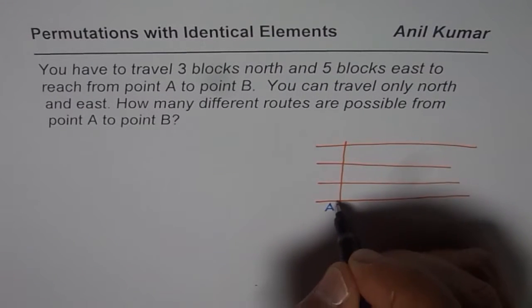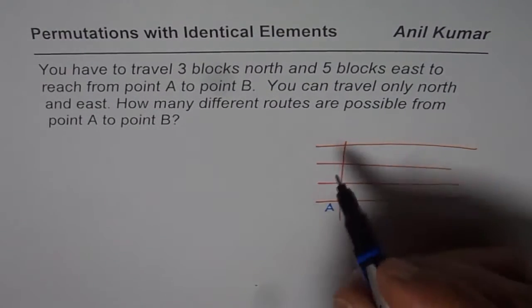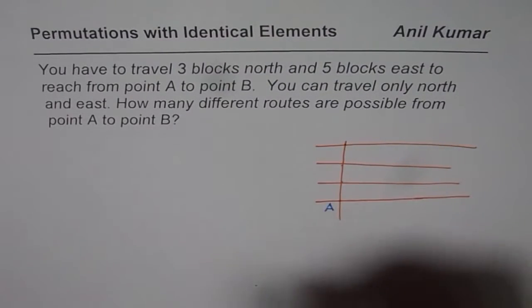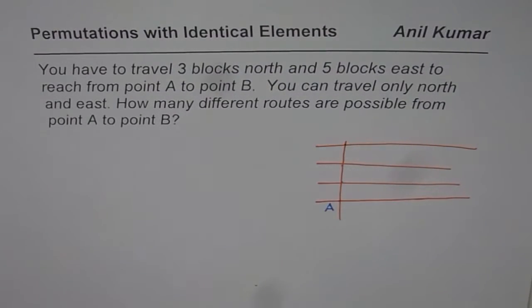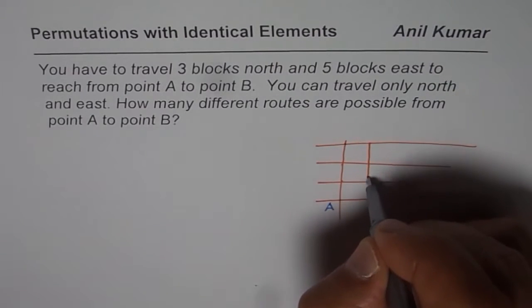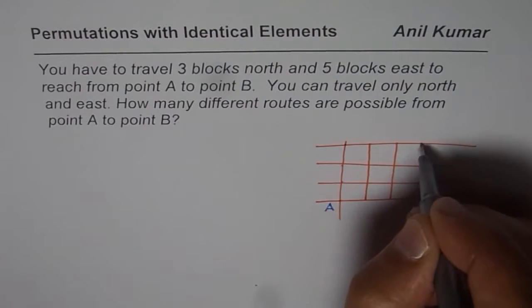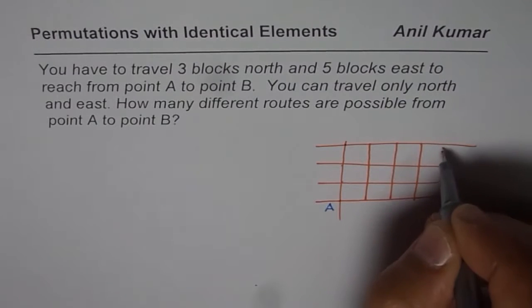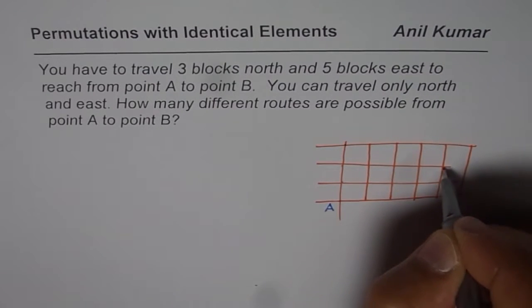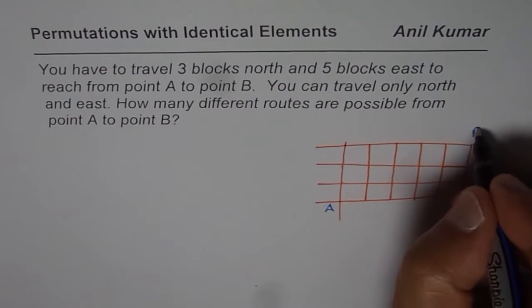From A, we have to go 3 blocks north — that means 1, 2, 3 — and 5 blocks east. So this is 1, 2, 3, 4, 5. That is point B for us.